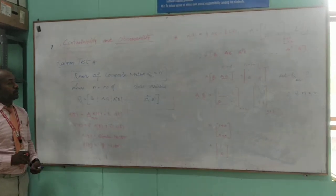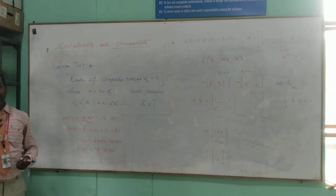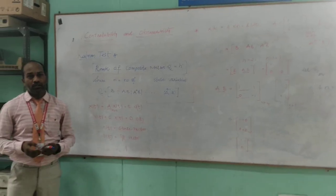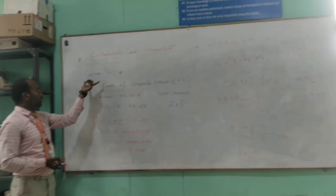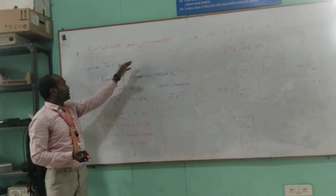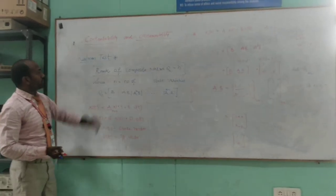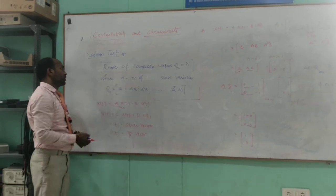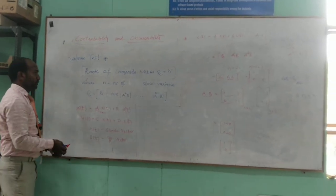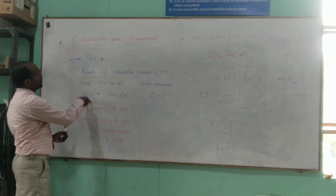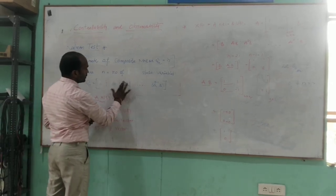Similarly, if you want to find observability — as I said, by measuring the output, if it is possible to determine the initial state of a given system, then that system is said to be observable. Again, the Kalman test is used. The logic is the same: the rank of the composite matrix should be equal to N. But here the structure of the composite matrix is different.